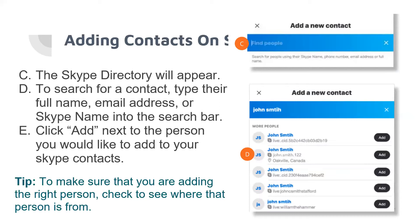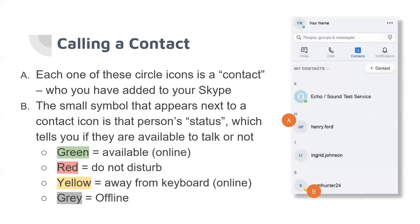Click Add next to any name that appears on your screen. When calling a contact, you can see their availability: green means the person is available online, red means Do Not Disturb, yellow means away from keyboard, and gray means the person is offline. These are the status symbols that will appear when using Skype.